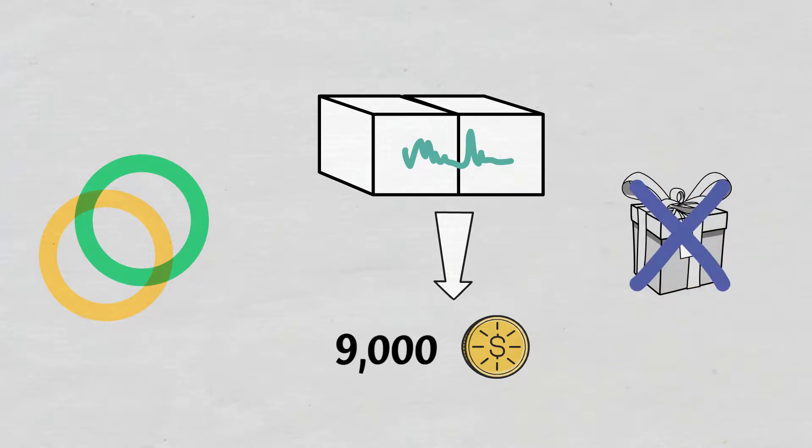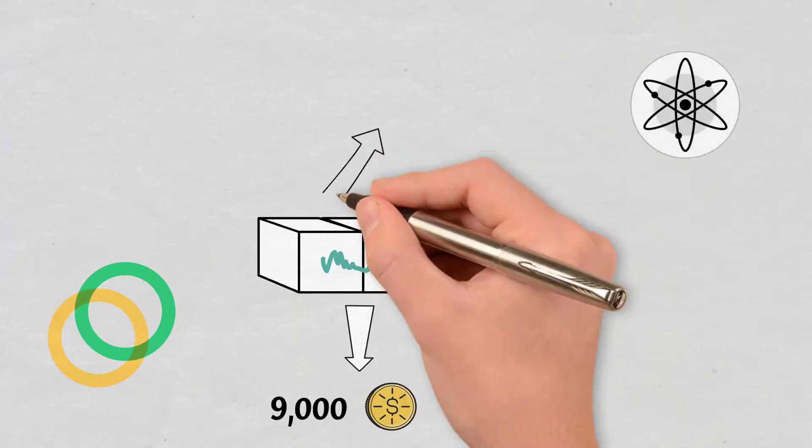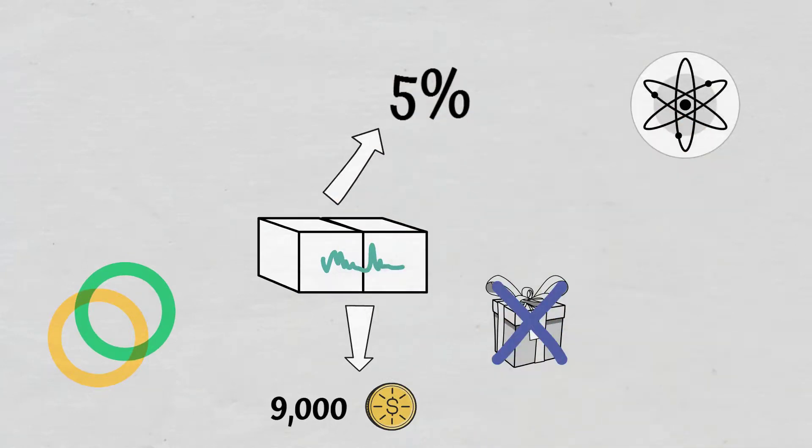The slashing amount for this behavior, in the case of Cosmos, is 5% and the validator is banned from proposing blocks and can no longer earn rewards.